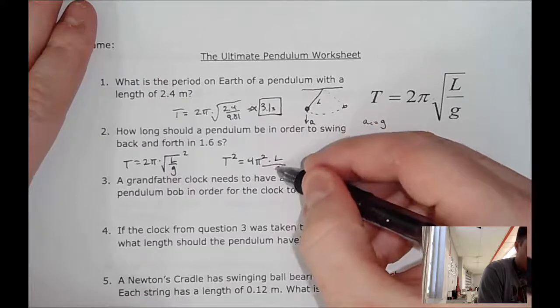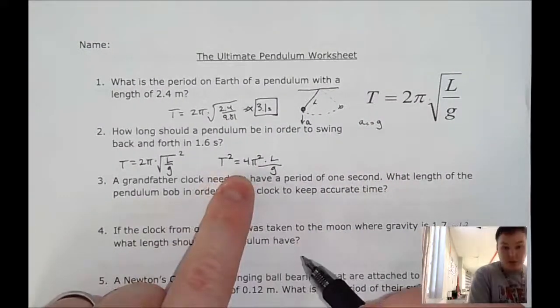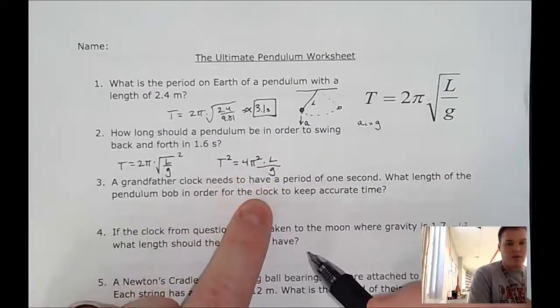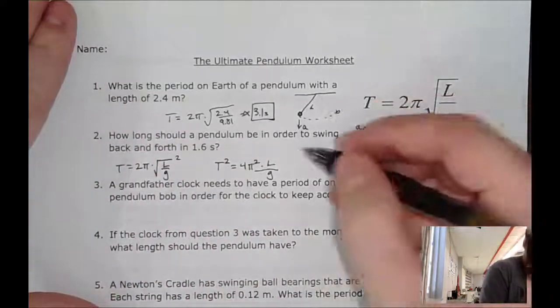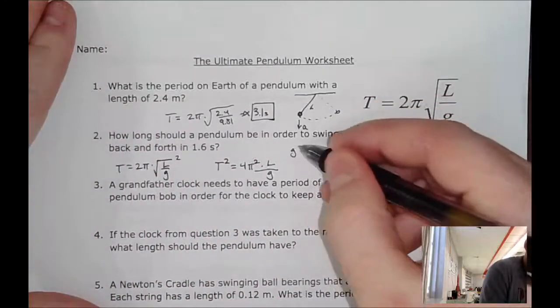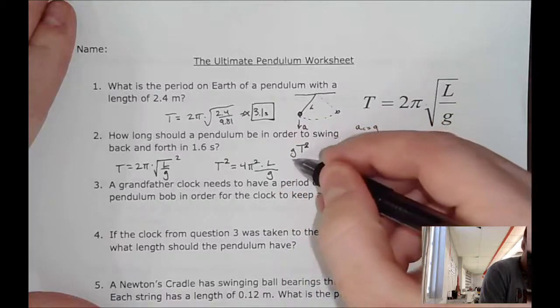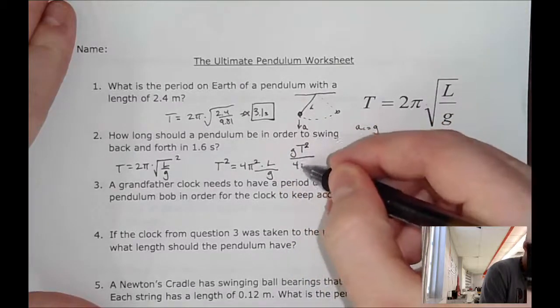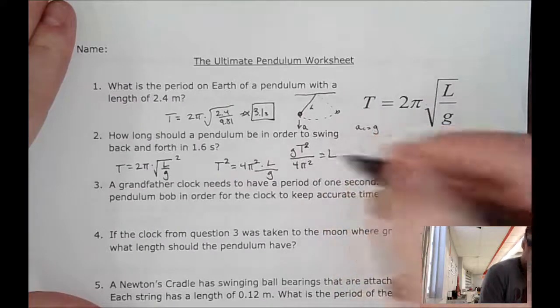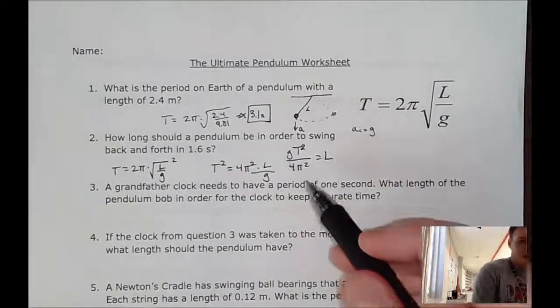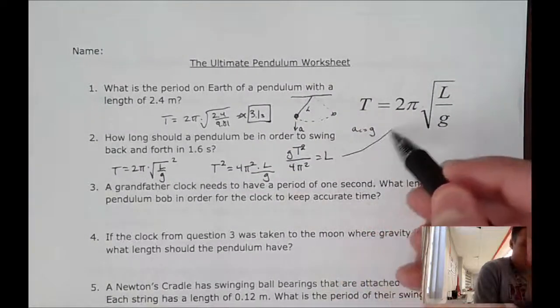So, period squared equals 4π² times L over g. So rearranging this, we get L = g times T² divided by 4π². And this is a very important formula. So this formula is the exact same thing as this formula, it's just written and solved for a different variable.